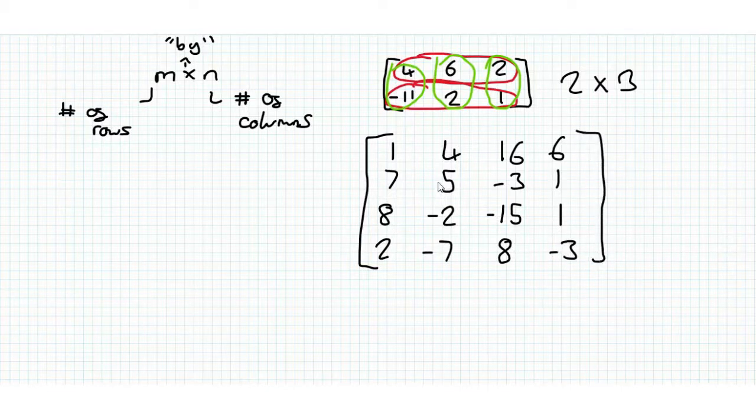So now this matrix has 1, 2, 3, 4 rows, and 1, 2, 3, 4 columns. So this is a 4 by 4 matrix. And this leads us on to our next point.